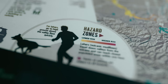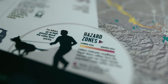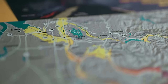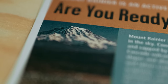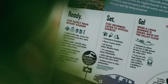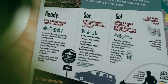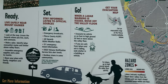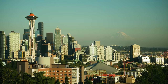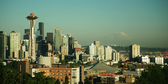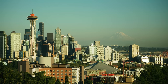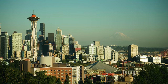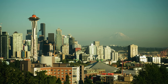Look closely and you'll see that it looks a little different. There's no mention of the lava and ash that we usually associate with dangerous volcanic eruptions. Because what makes Rainier so dangerous isn't fire. It's ice.